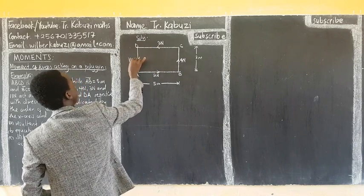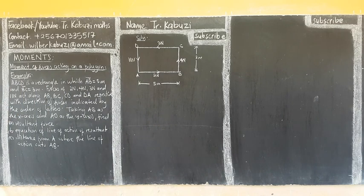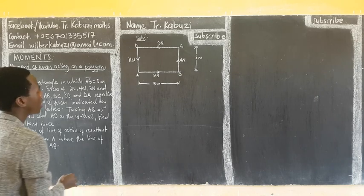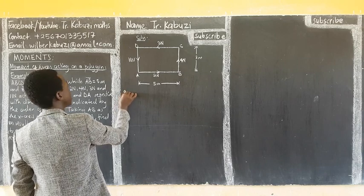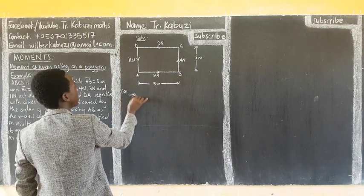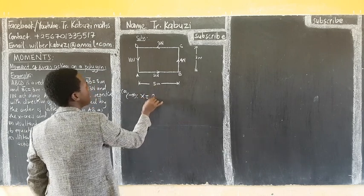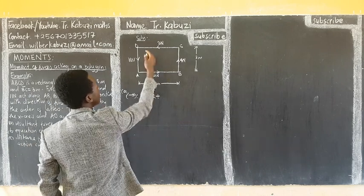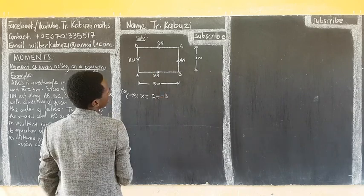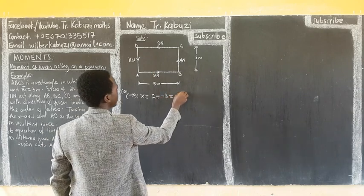After finishing that, taking AB as the X-axis and AD as the Y-axis, find the resultant first. So to get our resultant, we need the X component. Our X is going to be, in the direction we have 2 plus, you see this side is negative, so this will give us negative 1.